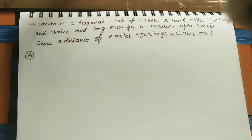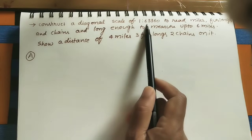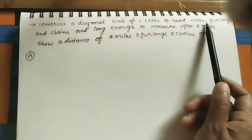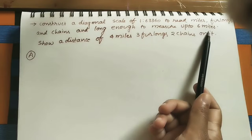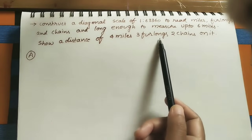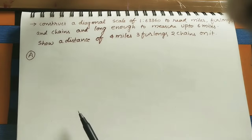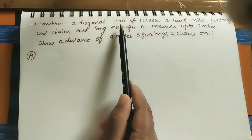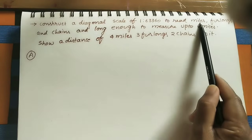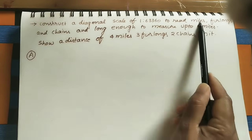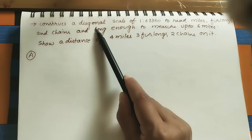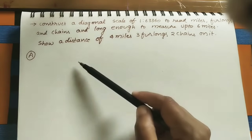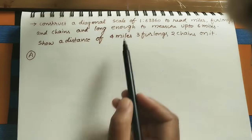Welcome to my channel. Let us construct a diagonal scale. The given data is: construct a diagonal scale of 1:63,360 to read miles, furlongs, and chains, long enough to measure up to 6 miles. First, show a distance of 4 miles 3 furlongs 2 chains on it. We have to construct one diagonal scale to show miles, furlongs, and chains — three consecutive units. Whenever three units are to be marked, that scale is called a diagonal scale. Always remember to write down the given data first.